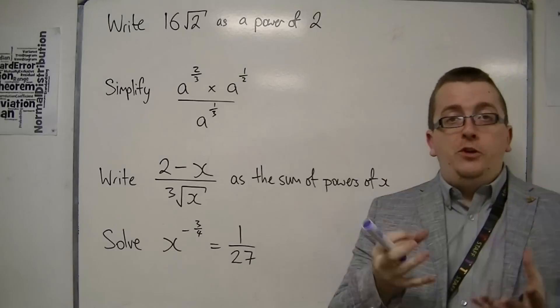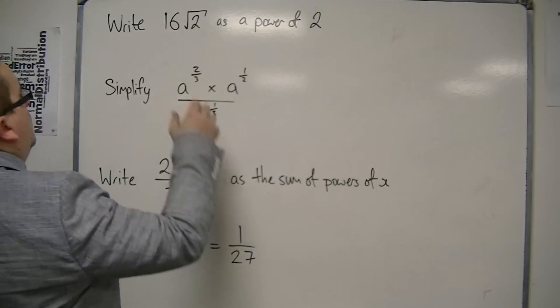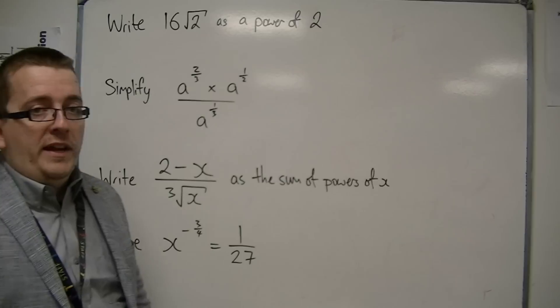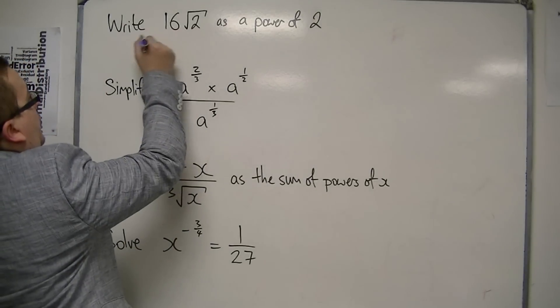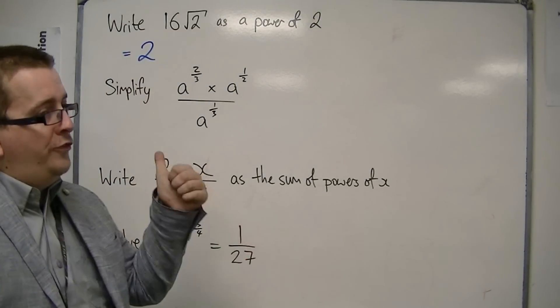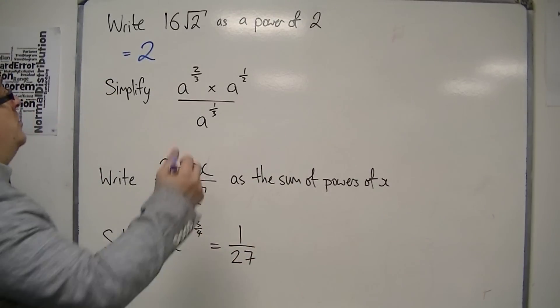So we want 2 to the something. First of all, we're going to want to change that 16. Now, 16 is 2 to the power of, well, we've got 2, 4, 8, 16. So, 2 to the power of 4.